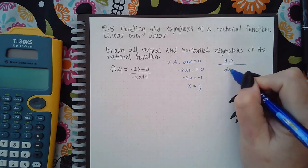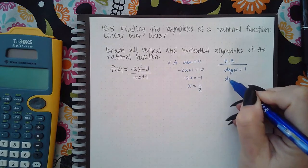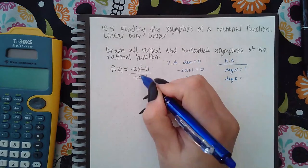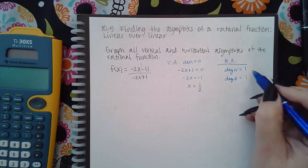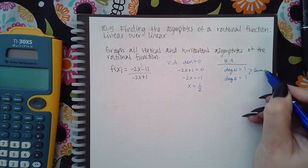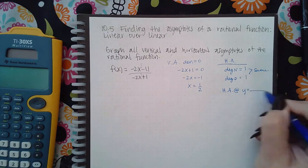For the horizontal asymptote, I have to talk about the degrees. So the degree of the numerator is the exponent one, and the degree of the denominator is the exponent one. These are the same. When they are the same, the horizontal asymptote happens at y equals the leading coefficient of the numerator divided by the leading coefficient of the denominator.